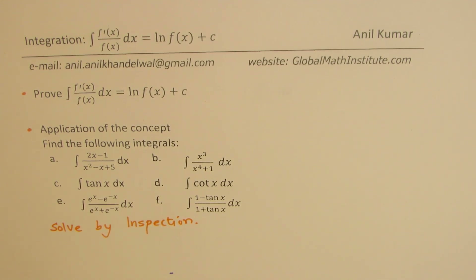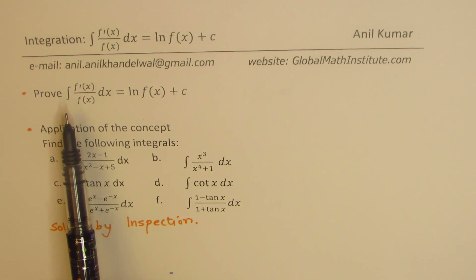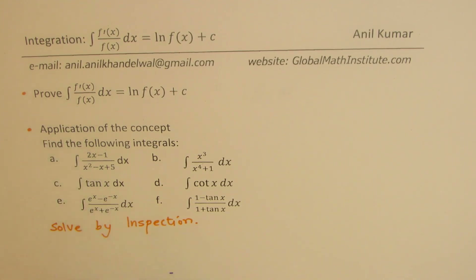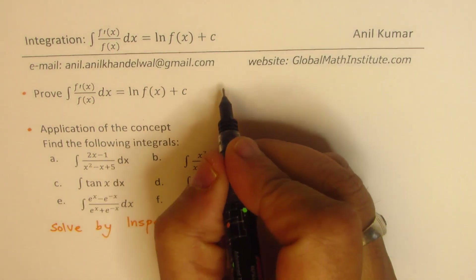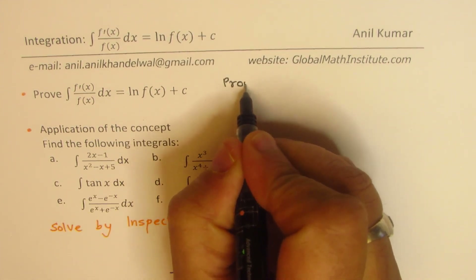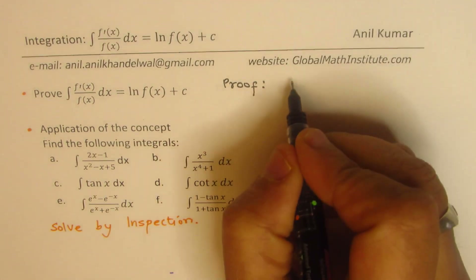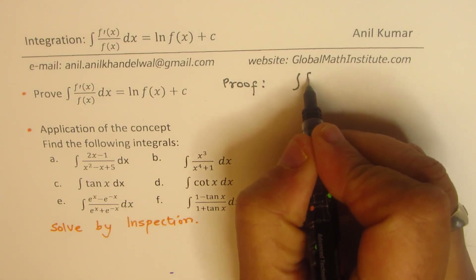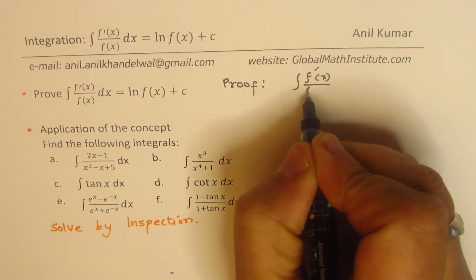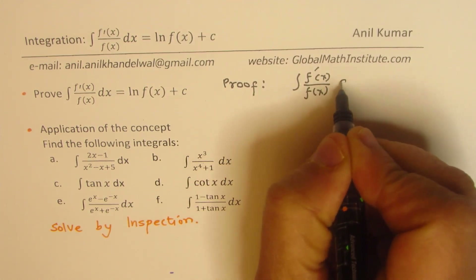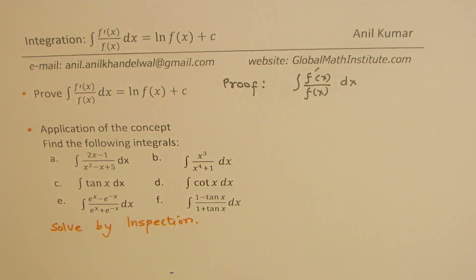Let's begin with what the theorem is: the integral of the derivative of a function divided by the function itself is ln f(x) plus c. Here is a proof for the same. We need to find the integral of the derivative of the function over the function — an indefinite integral.